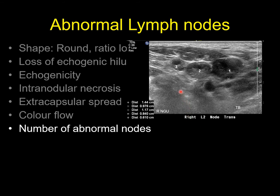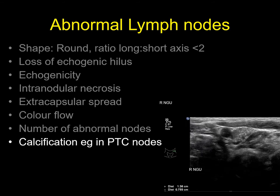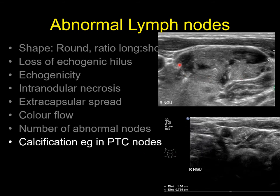If you spot numerous lymph nodes at various levels of the neck all looking very much the same — abnormal, enlarged, or necrotic — then there is likely to be a pathology present. Here you can see a very large-looking lymph node, larger than usual.